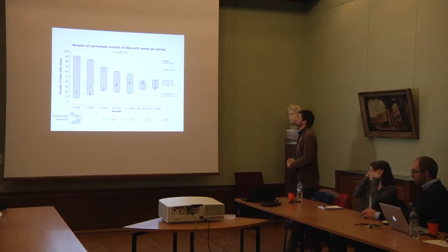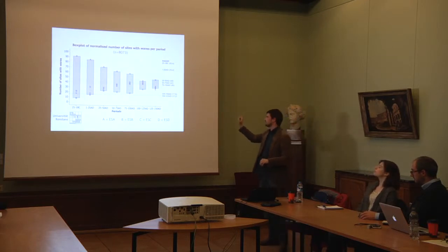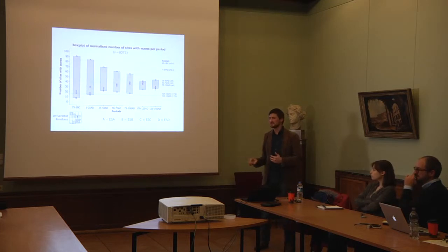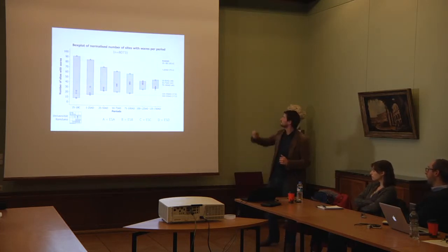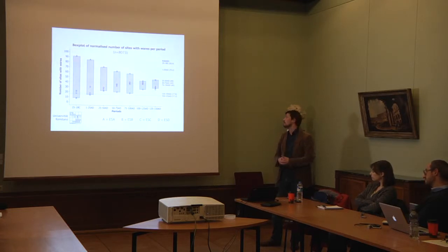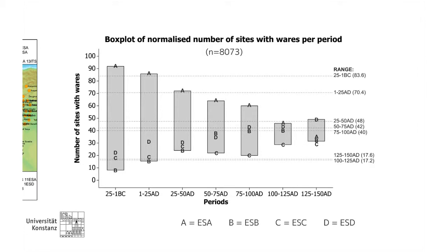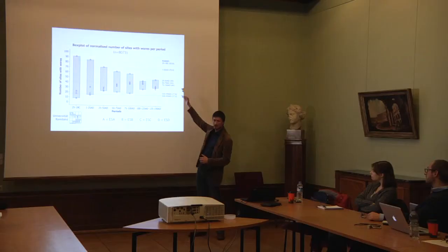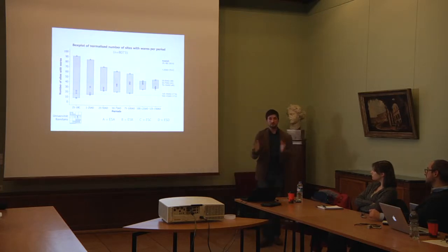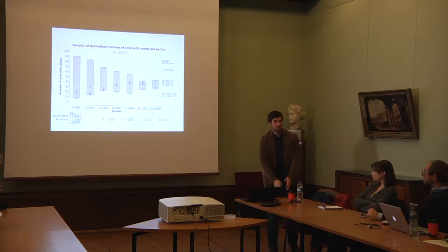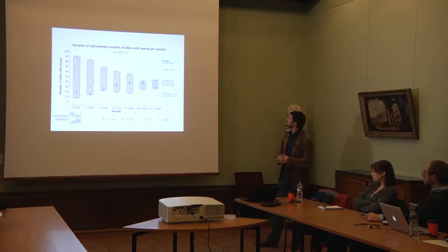The dashed lines represent the range — calculated as the maximum number of sites a ware is present on minus the minimum number of sites. So in the first box, it's basically 90 for ESA minus 10 for ESB, a range of about 83. Through time we see that the maximum difference between any two wares in any 25-year period decreases from 80 to 70 to 48 to 42 to 40 to 17. This is the pattern we're interested in — a pattern that Roman archaeologists have linked to processes about the functioning of the Roman economy.